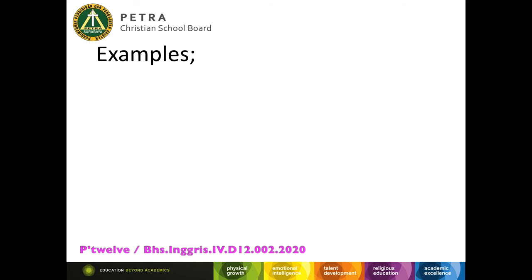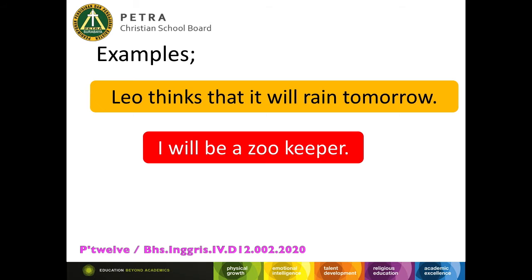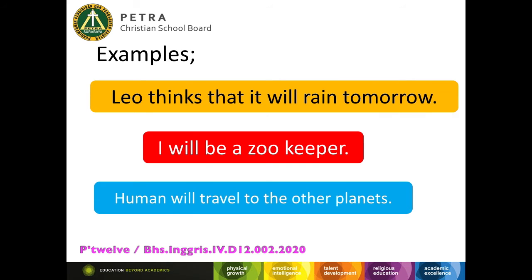Here, I will give you some examples. Leo thinks that it will rain tomorrow. I will be a zookeeper. Human will travel to the other planets.